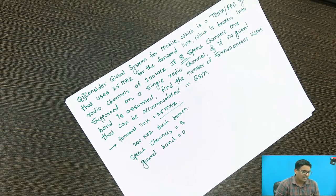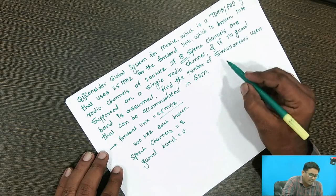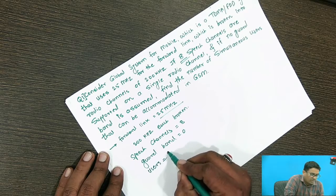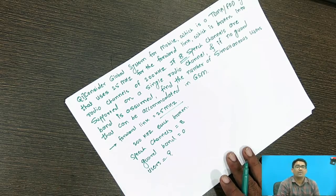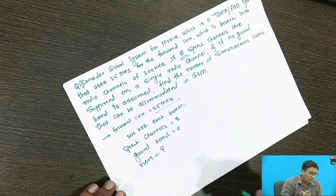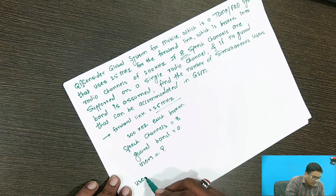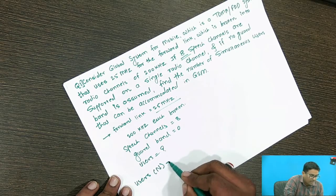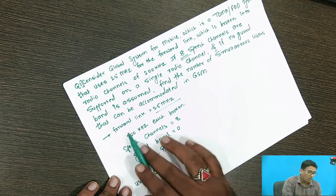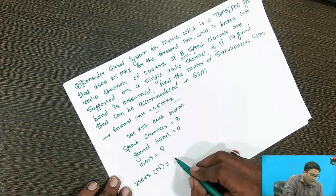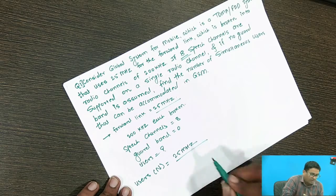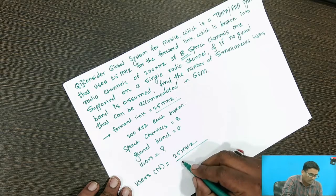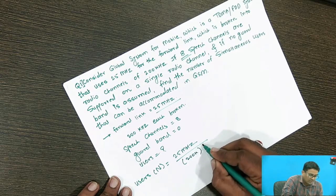Now I want to calculate the number of simultaneous users. The number of users N is equal to the total forward link bandwidth, 25 MHz, divided by 200 KHz divided by 8. So I will use the calculator here: 200 KHz divided by 8.